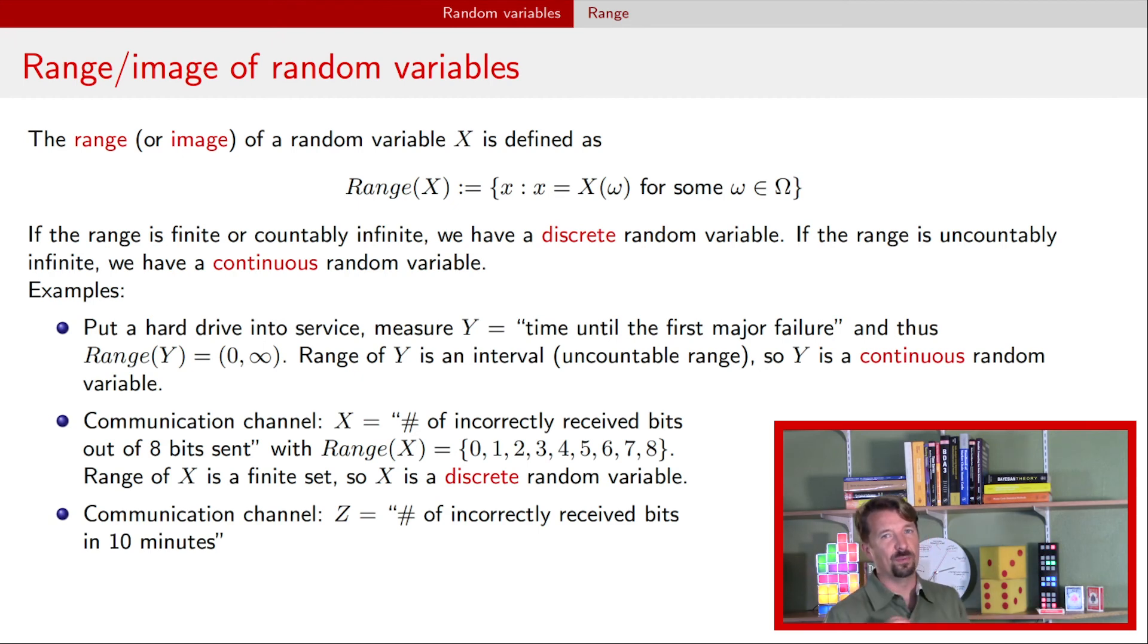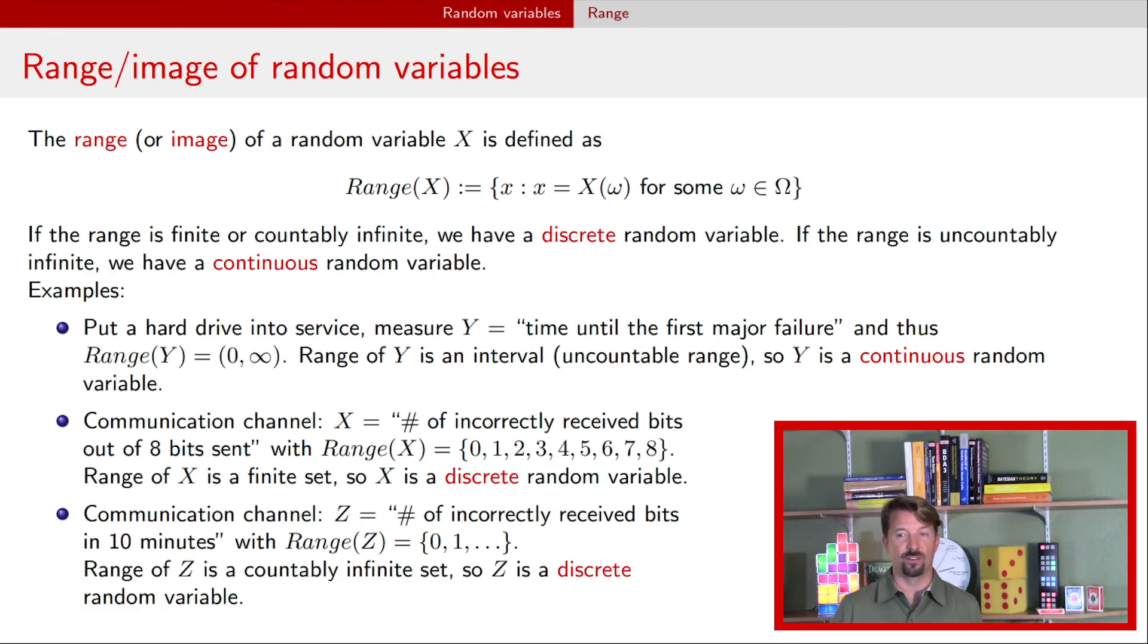We could also take that same kind of communication channel, but we can send bits as fast as we can. Maybe we can send them infinitely fast. And all we care about is how many were incorrectly received in the course of 10 minutes. Well, if we could send infinitely through that channel, then we have a possibility of having an infinite number of incorrectly received bits. So the smallest incorrect received bits we could have is zero if the communication channel was perfect. But we can have one, or two, or three, or four, or five, or six. But the key is that set or collection of numbers is countably infinite. If you don't remember what countably infinite means, there's going to be a link up here to another video talking about countably infinite. The range of this random variable is the integers 0, 1, 2, on up to infinity. But this is a countable set. And because it's a countable set, this is going to be a discrete random variable.